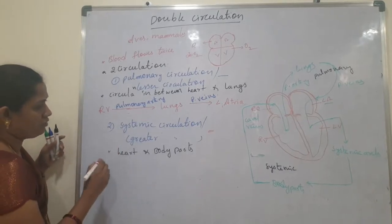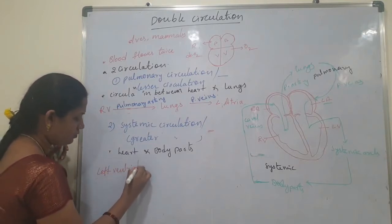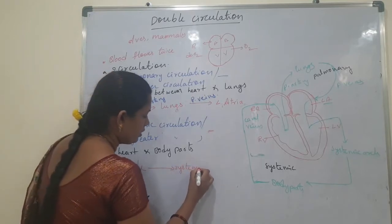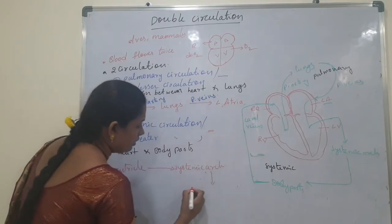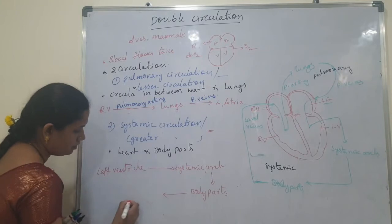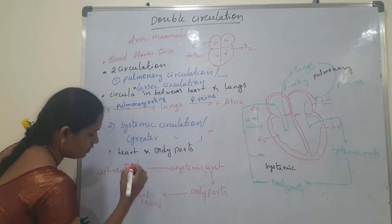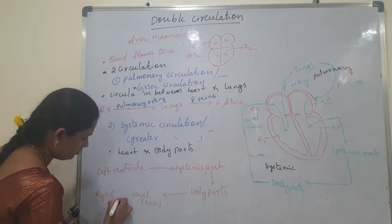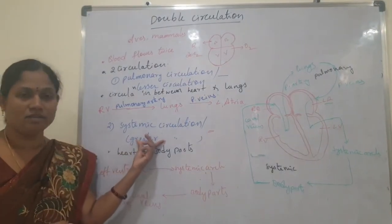In flowchart form: the left ventricle pumps blood to the systemic arc, from the systemic arc it reaches the body parts, and from the body parts it returns through the caval veins into the right atrium. This circulation is called systemic circulation or greater circulation.